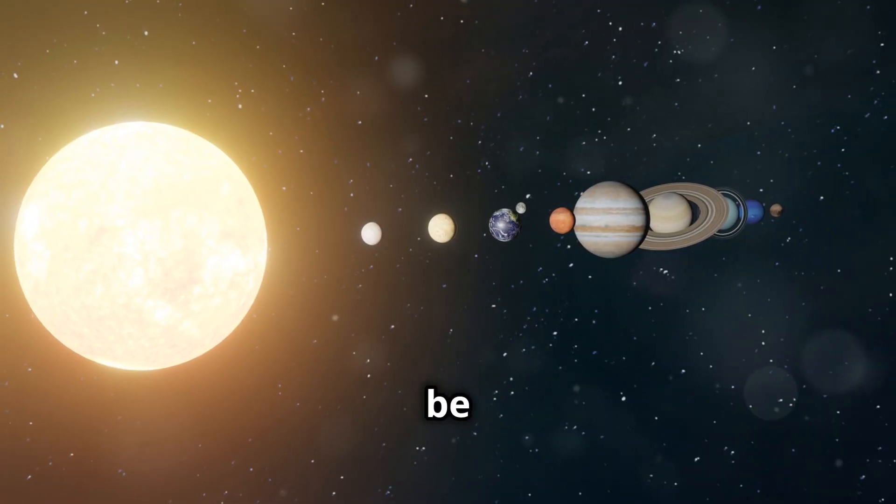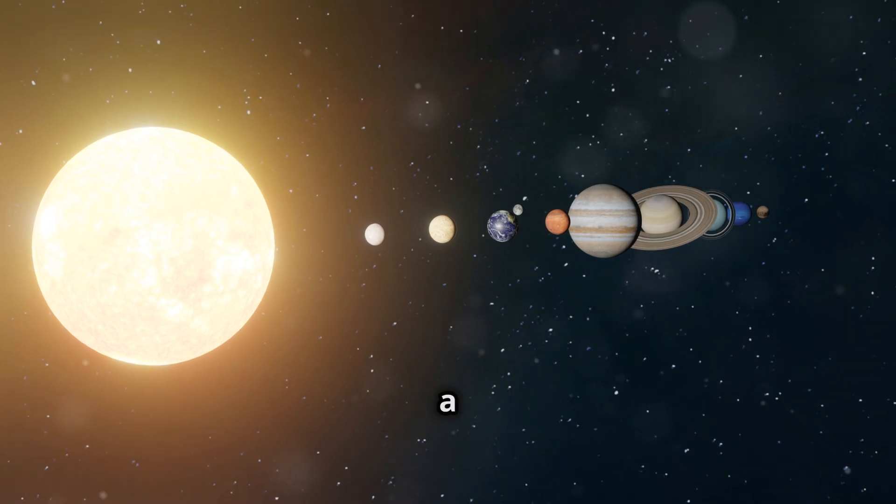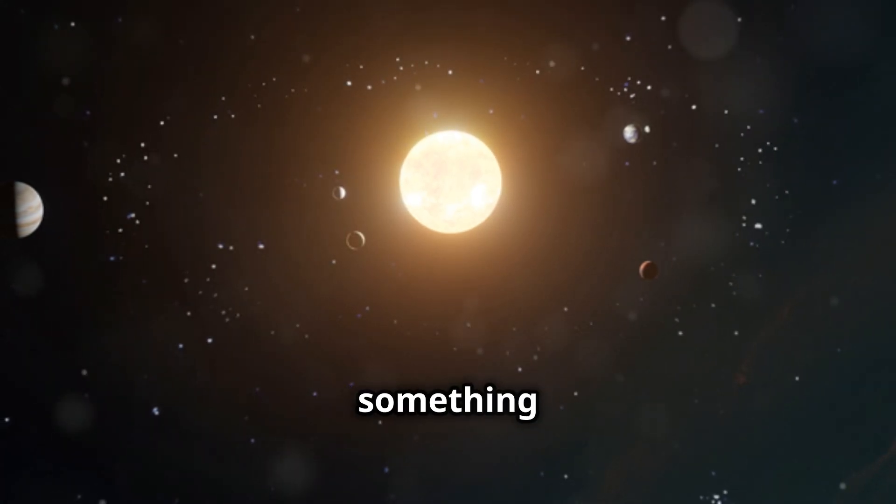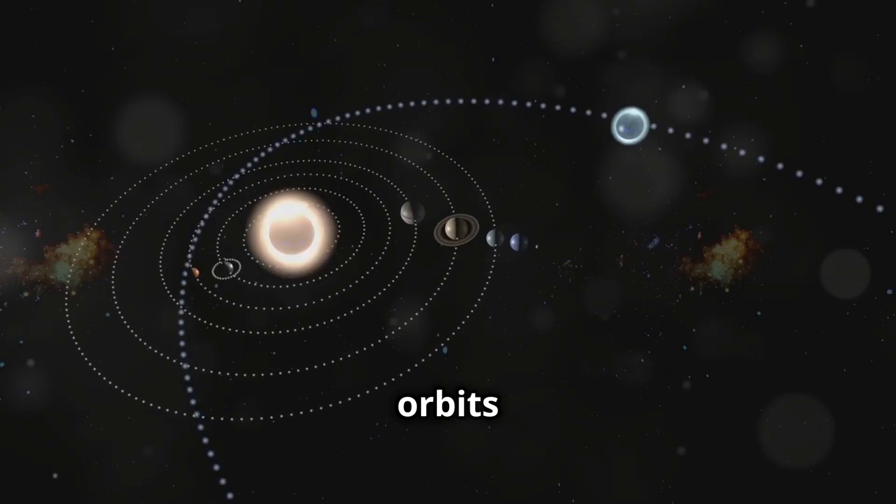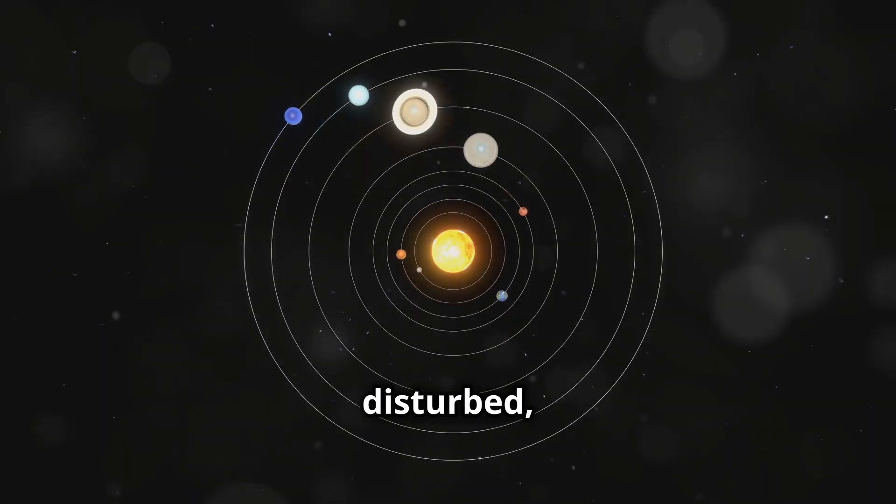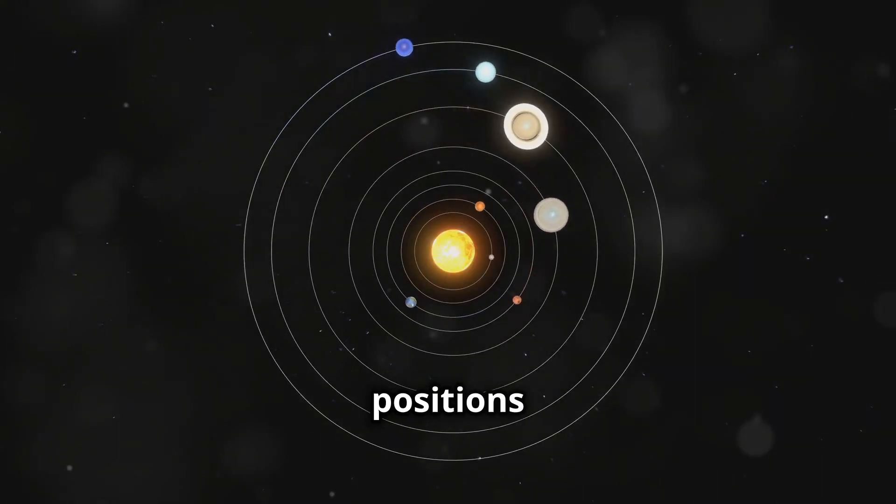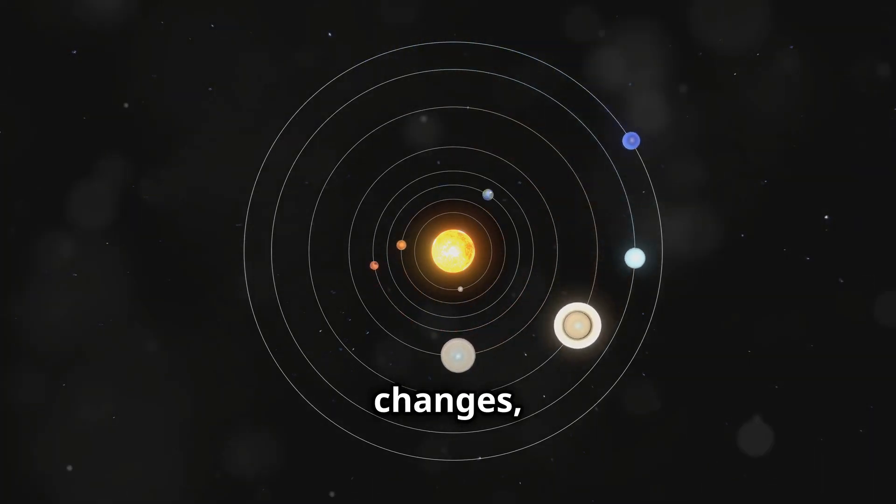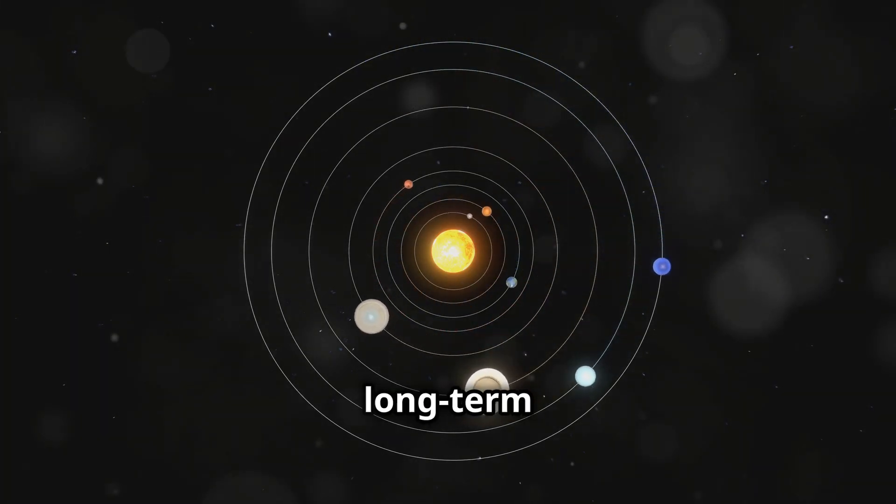The loss of Earth would also be felt by the other planets, but on a smaller scale. They would continue their orbits, but something would be different. The orbits of the inner planets would be slightly disturbed, leading to small changes in their positions and the time they take to go around the sun. These changes, although subtle, could have long-term consequences.